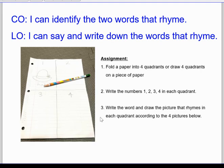When you are done doing that, I want you to write the word and draw the picture that rhymes in each quadrant according to the four pictures below. You see right here, I already drew a picture of a rhyming word that rhymes with the first picture and I also wrote the word.